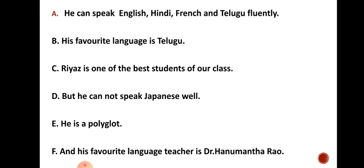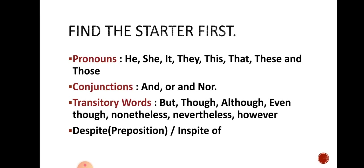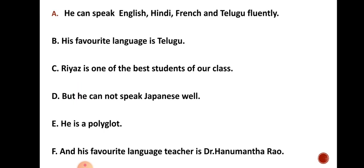Option E reads 'He is a polyglot' — again, who is a polyglot? So we can also eliminate option E. Therefore options A, B, and E have been eliminated because these three sentences begin with pronouns, which we generally do not use to start a paragraph. I have used pronouns to find the starter and eliminated three options. Now A, B, and E cannot be the starter since they begin with pronouns. The next thing to concentrate on is conjunctions.